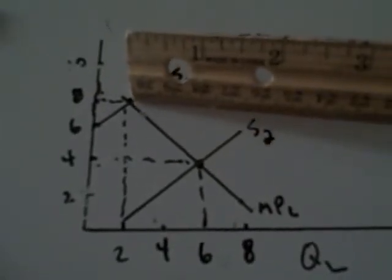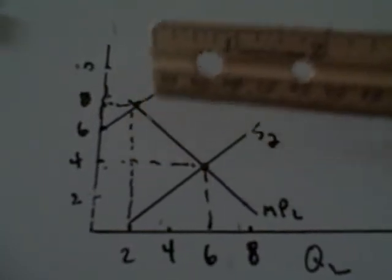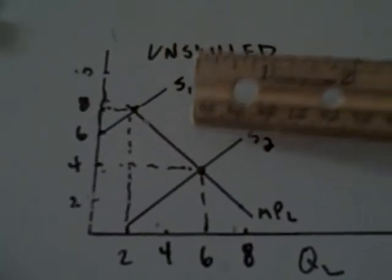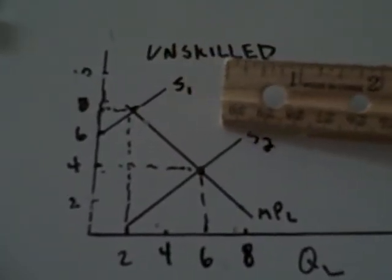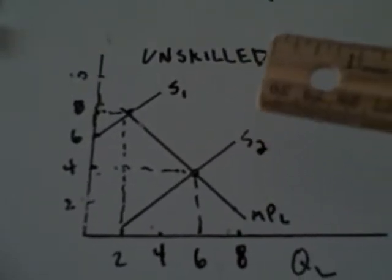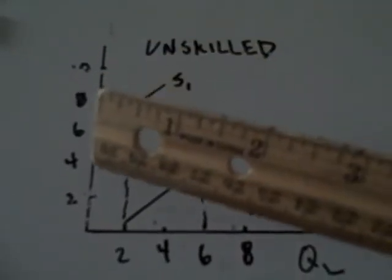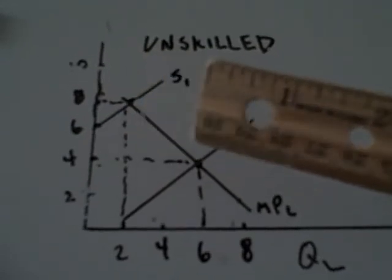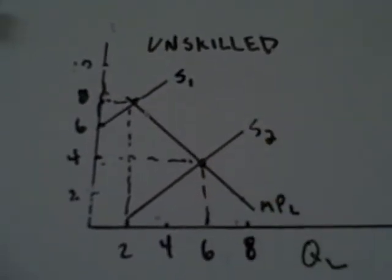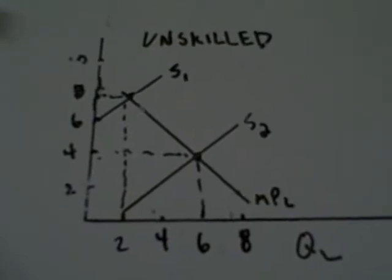Here, and I know these aren't real numbers, but 8 times 2 is 16. If the unskilled labor are pushed into finding other unskilled jobs, even though their wage rate decreases to 4, their total income would be 24, which would suggest that they're better off than they were before.